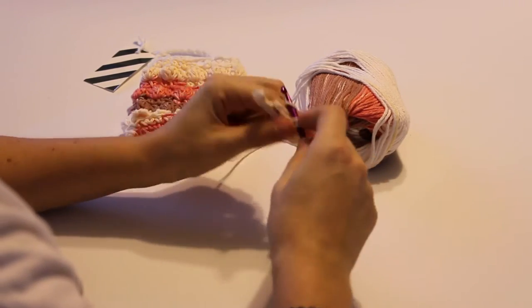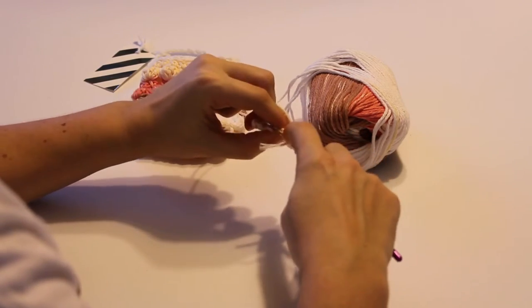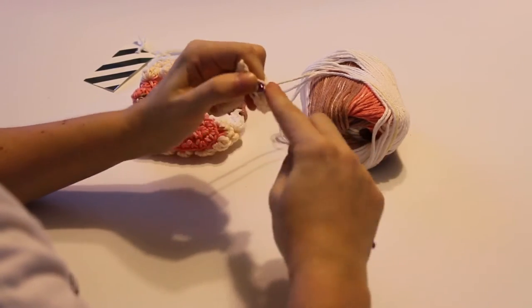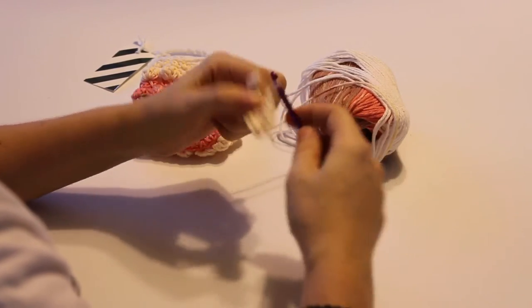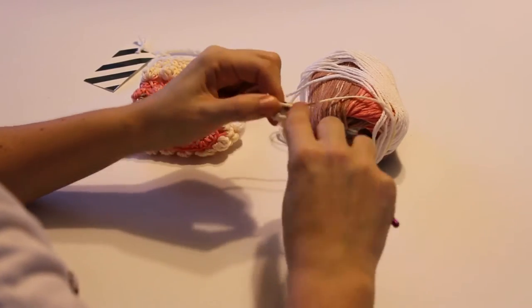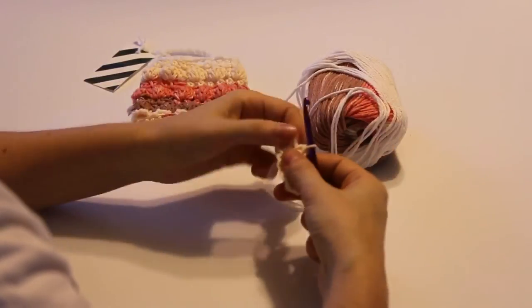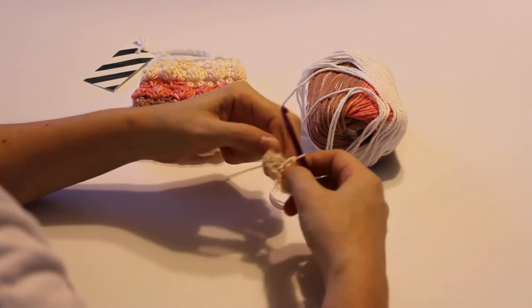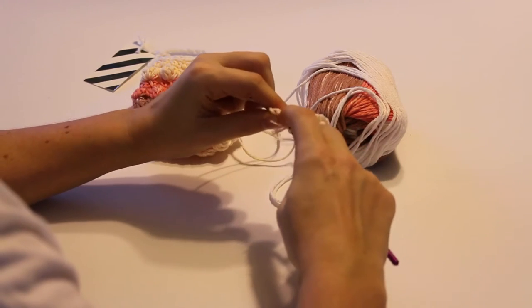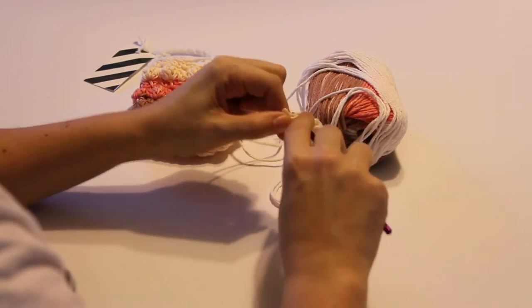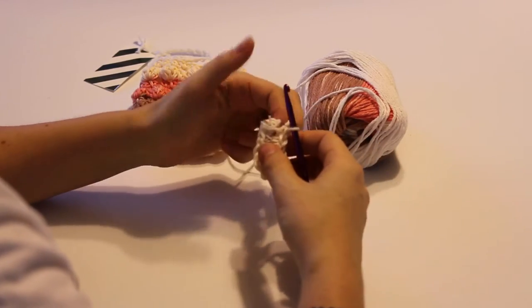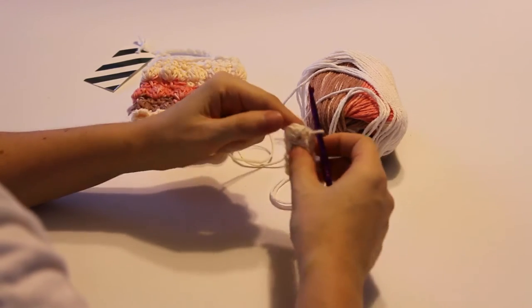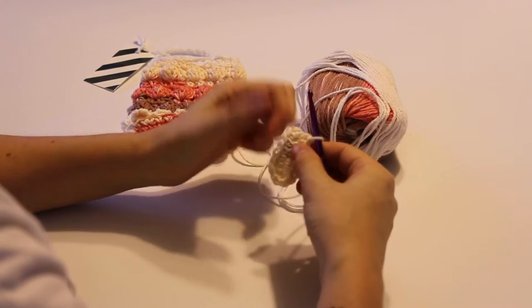So I'm working three single crochets into that last chain. And what that does is it turns your work. So now I'm working along the bottom of those chains that I just made. So I'm going to do five, one into the next five stitches, one single crochet. You don't really need to, but we're going to work another round around, but without joining.